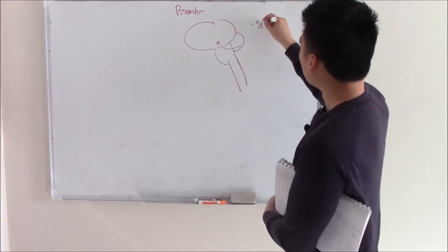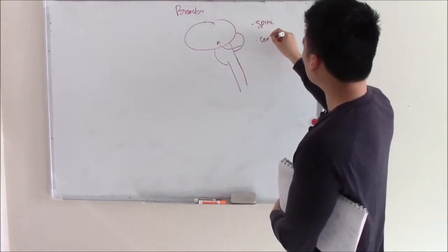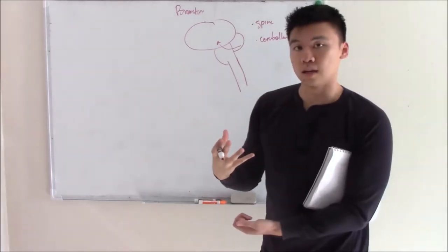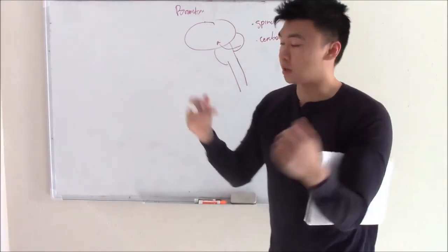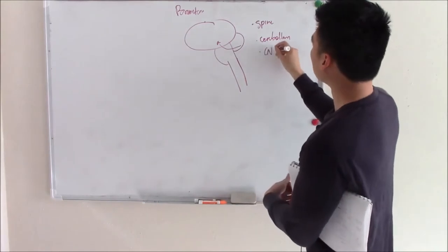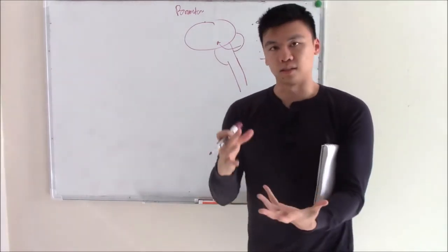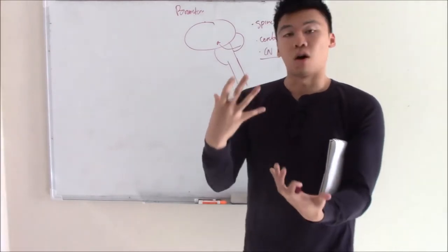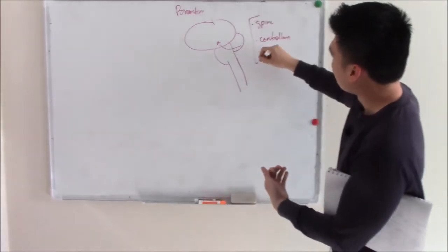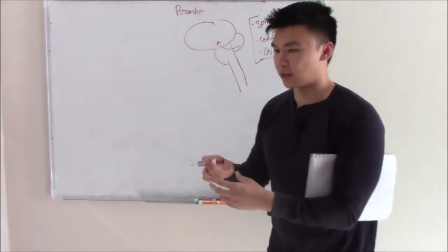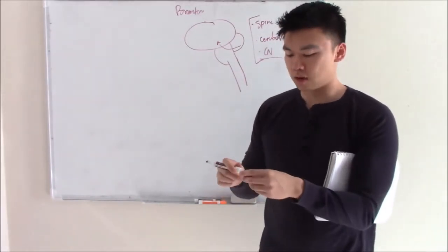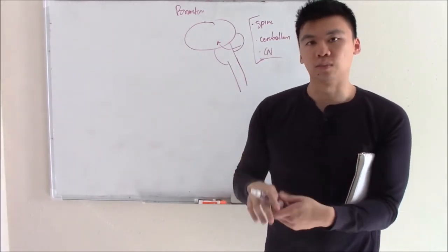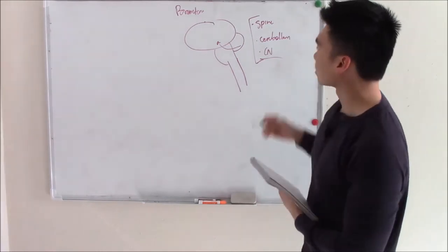So it connects your spine, your cerebellum. What else did we talk about the brainstem in? We talked about it in cranial nerves — your cranial nerves come out of your brainstem. So there's a lot that goes on in your brainstem. In this video we're going to talk about all of these: spine, cerebellum, and cranial nerves. We're going to try to recap and synthesize things together in talking about brainstem anatomy. I'll start with the spine first.